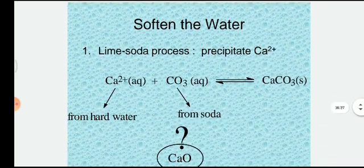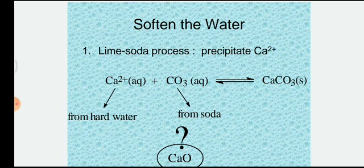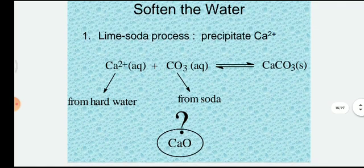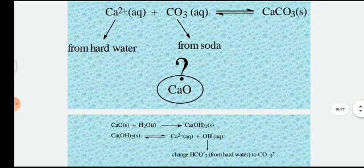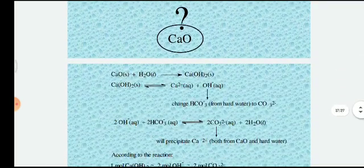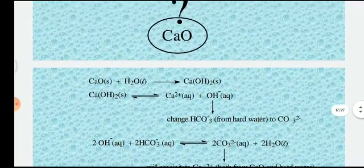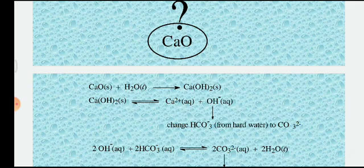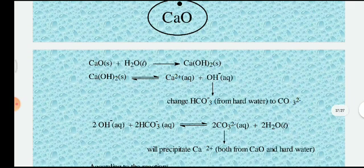One softening method is the lime-soda process. The reaction is: CaO + H2O → Ca(OH)2. Calcium hydroxide is then further reacted to neutralize bicarbonate ions, producing HCO3⁻.